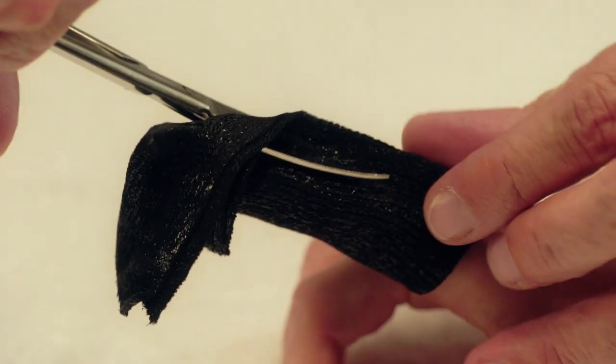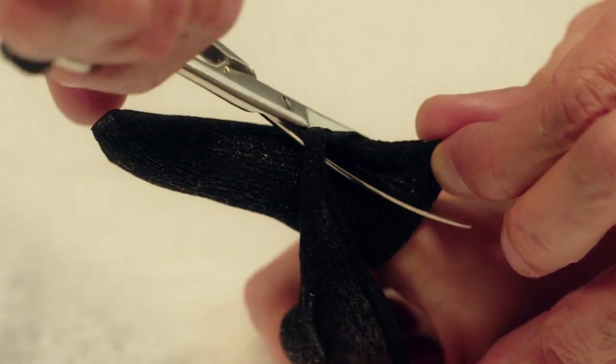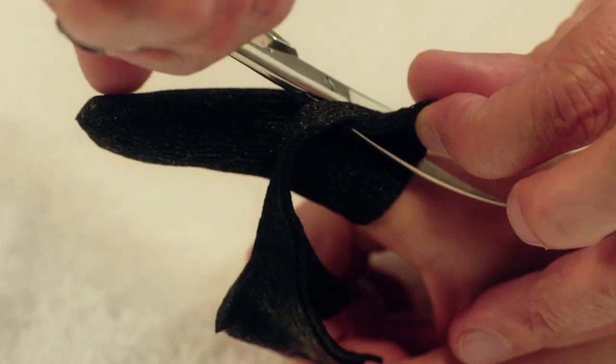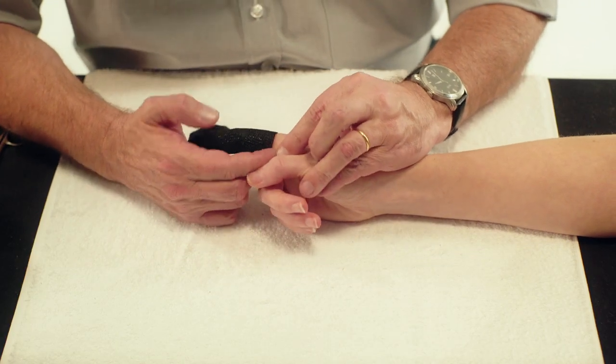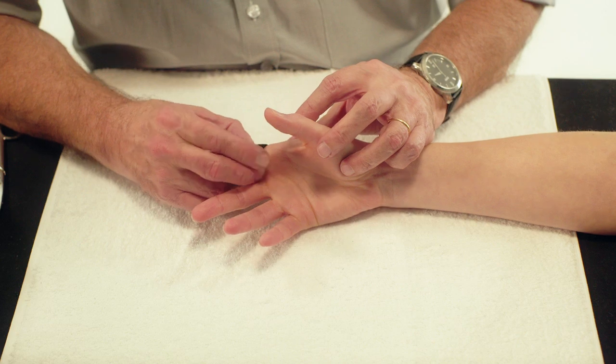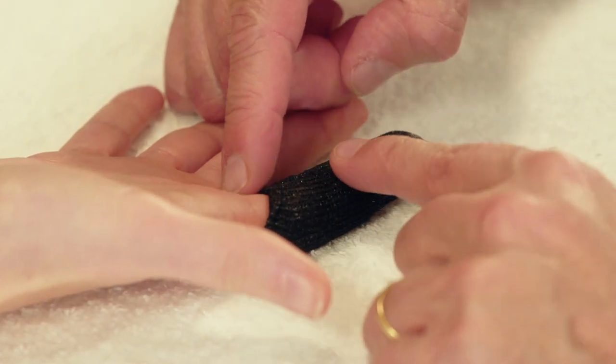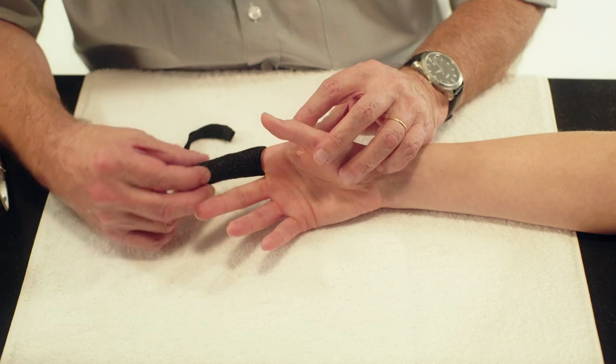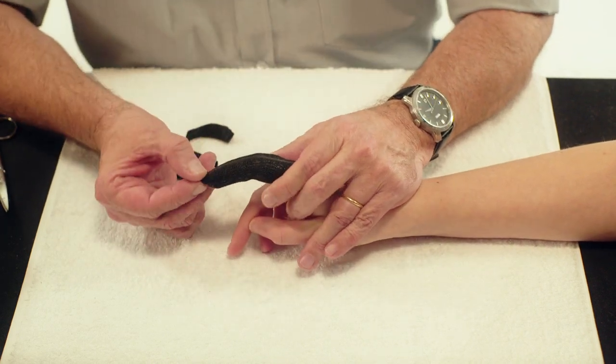Roll the edge of the orthosis on the palmer side upwards to smoothen the edge and to allow full finger flexion at the MCP joint. Position the finger in slight PIP flexion during the setting time.